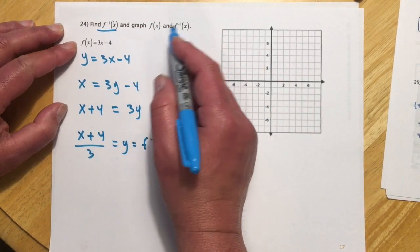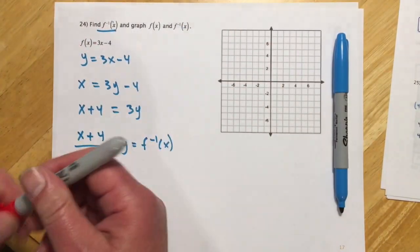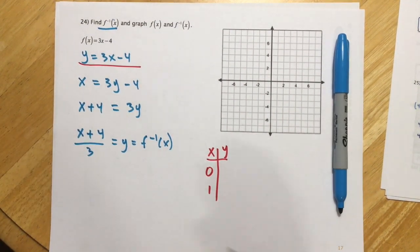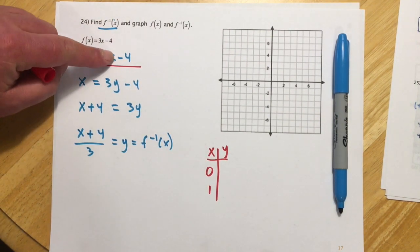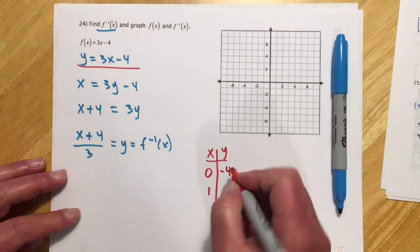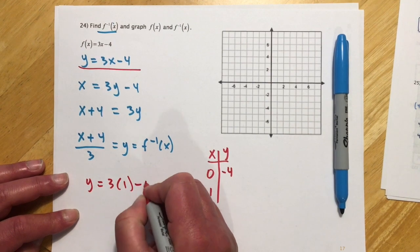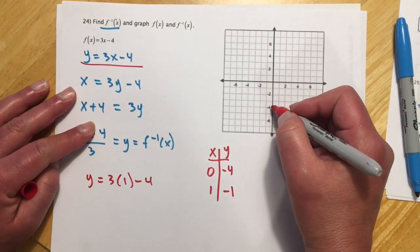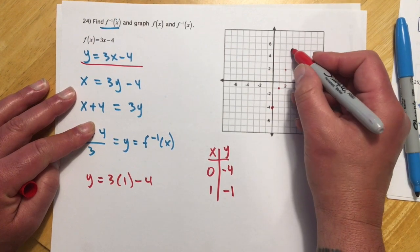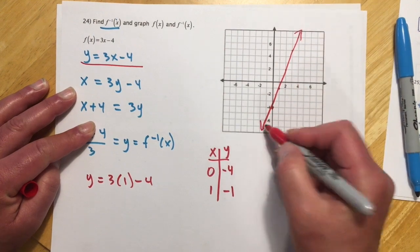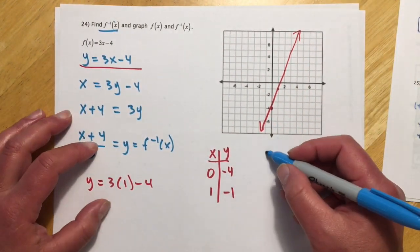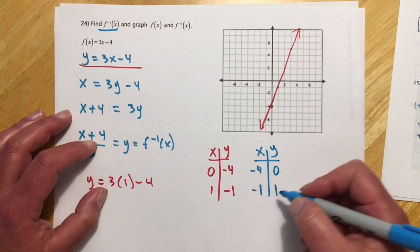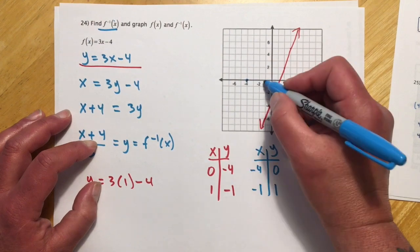Now we graph f of x and f inverse of x. For f of x equals 3x minus 4, I pick easy numbers 0 and 1: when x is 0, y is negative 4; when x is 1, y equals 3 minus 4 equals negative 1. For the inverse, all I have to do is flip the table: the points become (negative 4, 0) and (negative 1, 1).